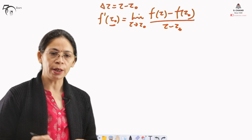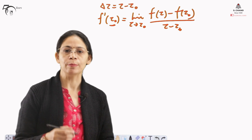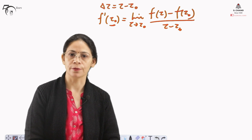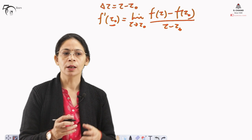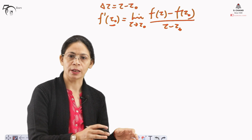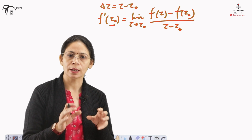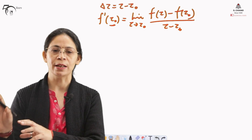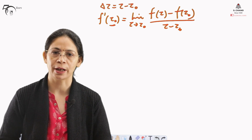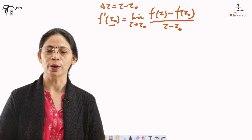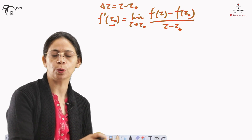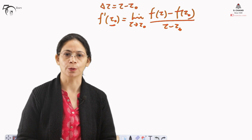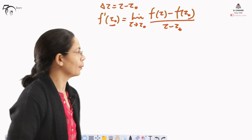The derivative of a complex function follows the same rules as the derivative of a real function. Whatever rules a real function f(x) follows, the complex function f(z) also follows those same rules, except for a few differences which we will see.